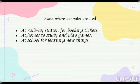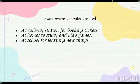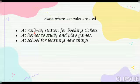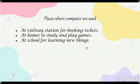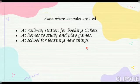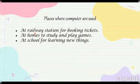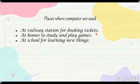The first place is at the railway station, where computers are used for booking tickets. During the pandemic time period, we usually book our tickets online. We get messages online and print our tickets using the computer. So the first place is at the railway station for booking tickets.